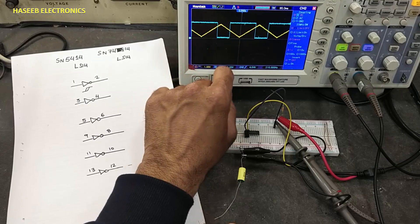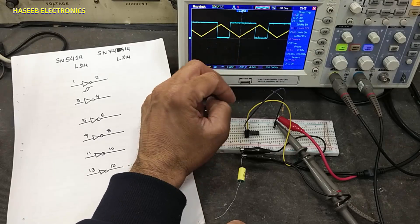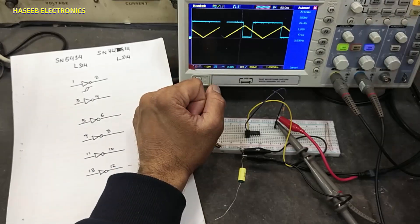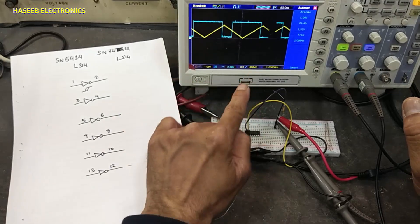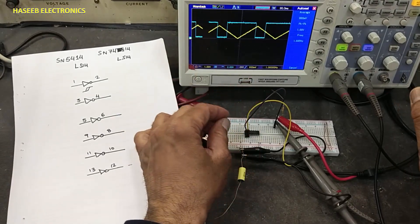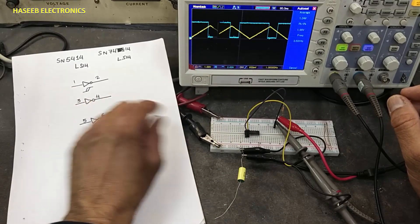It is inverting the signal—input trigger inverter. Now we can test the second gate, pins 3 and 4.